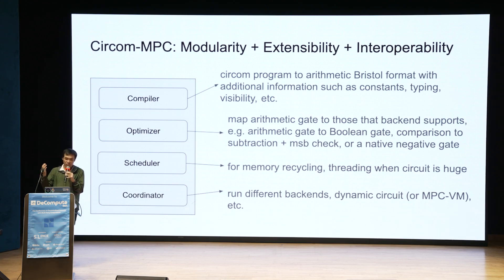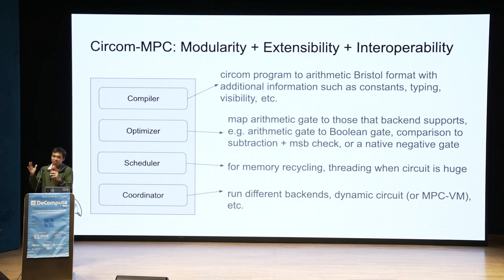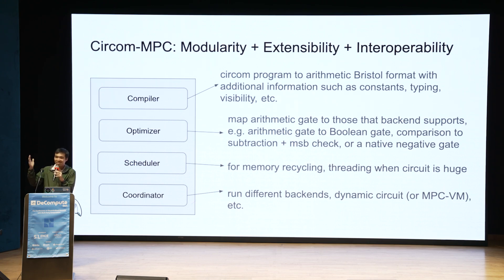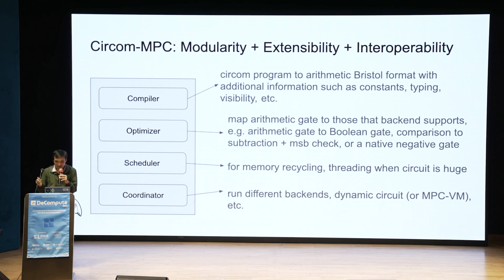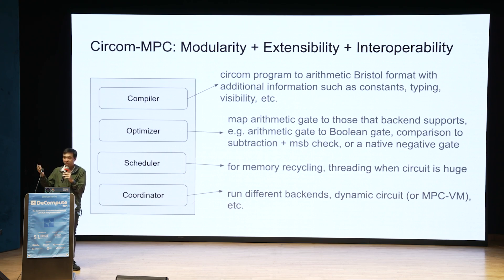In MP-SPDZ you can do comparison, but in other MPC frameworks like the garbled circuit one called MPZ, it doesn't allow direct comparison — you have to do subtraction and MSB check. Or if you have a native negation gate, you can expose it and tell the optimizer to use it directly. Similarly, if MP-SPDZ has pre-built log or cosine functions, you can expose them so the optimizer knows to use them directly.